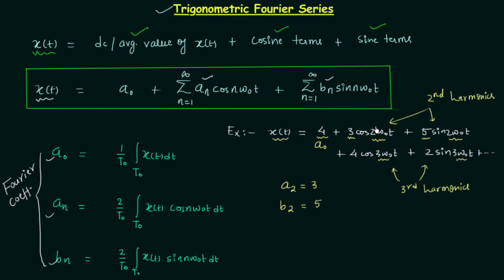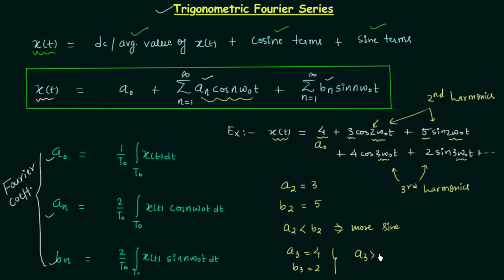Comparing a_2 = 3 and b_2 = 5, we see a_2 is less than b_2, which implies the sine term has more involvement than the cosine term at frequency 2ω_0 — there is more sine when frequency equals twice ω_0. For the third harmonics, a_3 = 4 and b_3 = 2, so a_3 is greater than b_3, implying that when frequency equals 3ω_0 the signal is more cosine-like. So a_n and b_n are simply the weights of the cosine and sine components at each harmonic frequency.